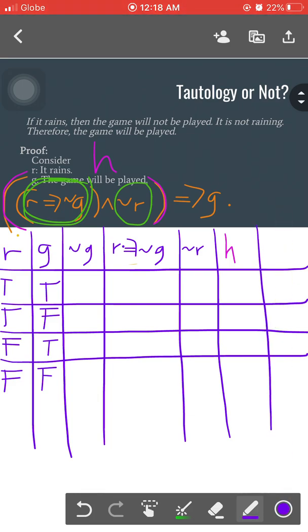Are we ready to operate this h with a conclusion g? Definitely, because we already have a column for g.